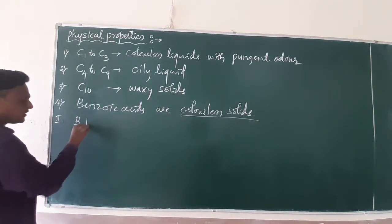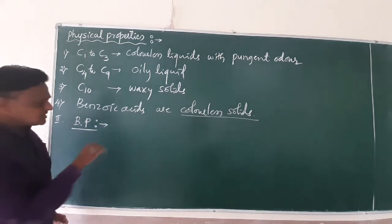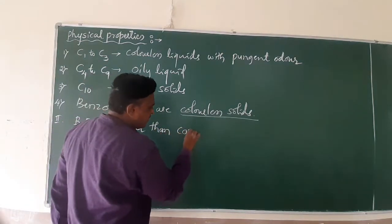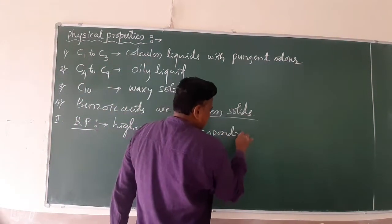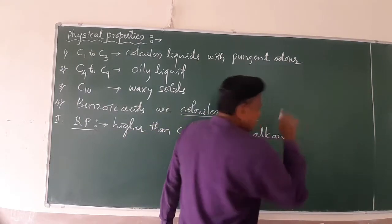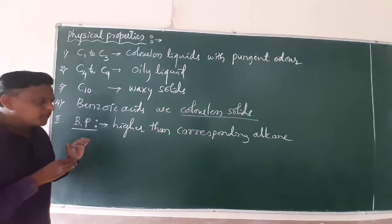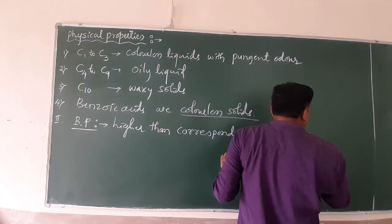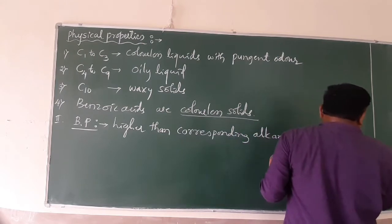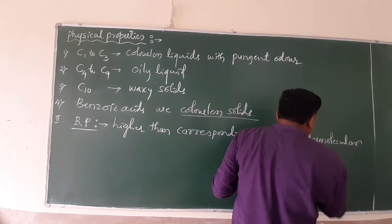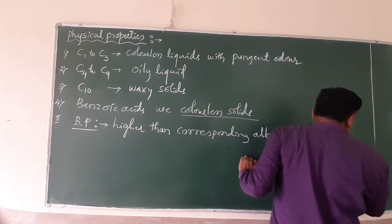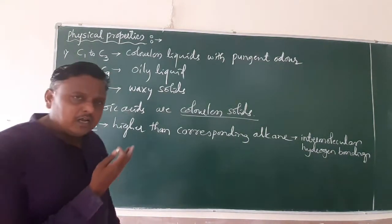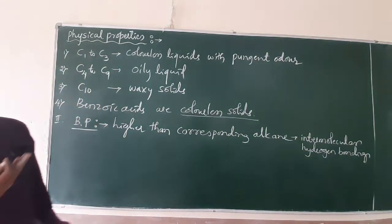The second physical property is boiling point. The boiling points of carboxylic acids are higher than those of corresponding alkanes, because carboxylic acids involve intermolecular hydrogen bonding. This is why carboxylic acids have higher boiling points compared to corresponding alkanes.